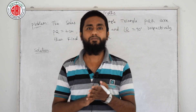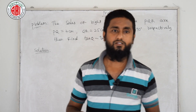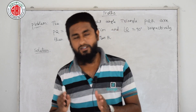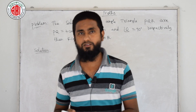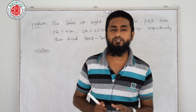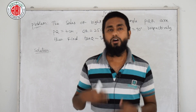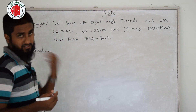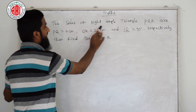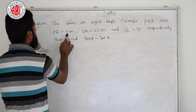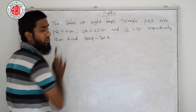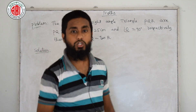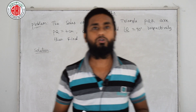This problem is available in your reader on page number 281, exercise 11.1, problem number 2. In some readers it may be on page 84 or nearby. You can see the question on the board. The sides of right angle triangle PQR: PQ equals 7 centimeters, QR equals 25 centimeters, and angle Q equals 90 degrees. Find tan Q minus tan R.